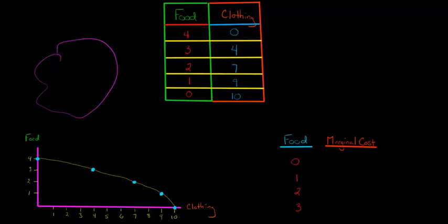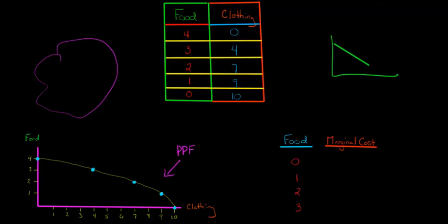We made our production possibilities frontier, and then we introduced the idea that there's an increasing marginal cost. That actually explains why the PPF usually has this bowed-out shape, instead of just a straight line. Usually the PPF has this bowed-out shape due to the fact that not all resources are equally productive.